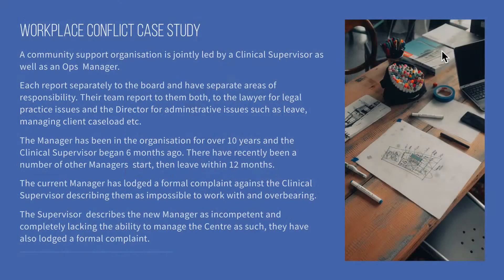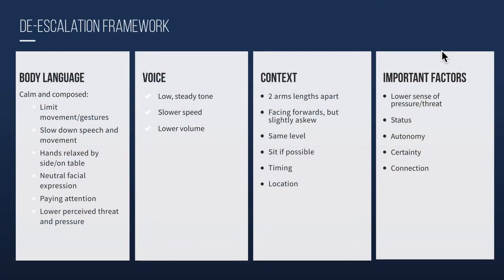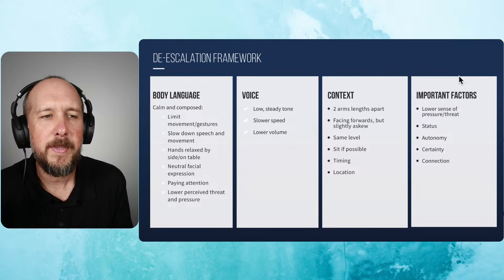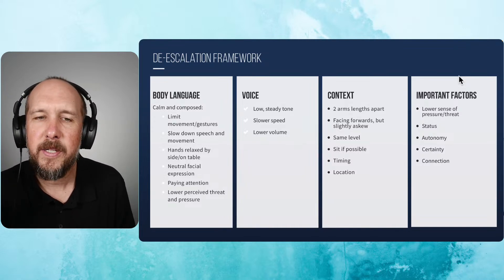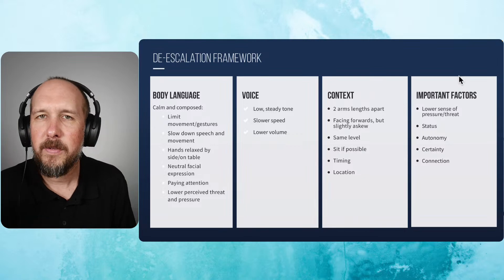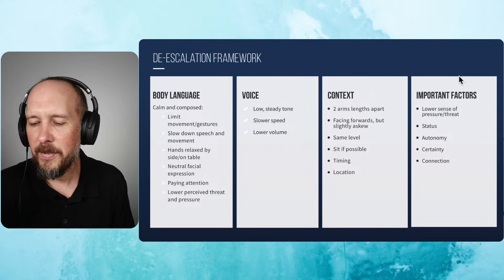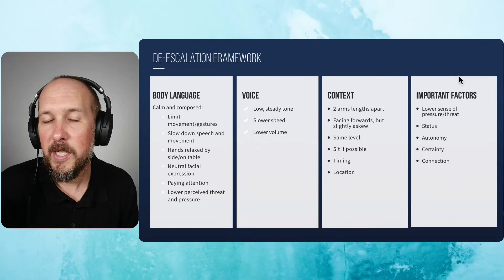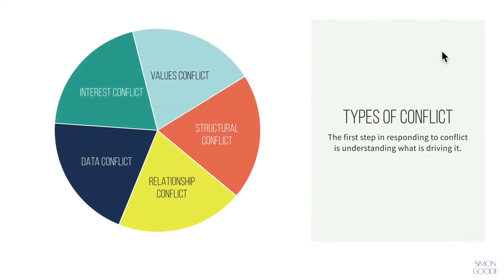So that's the classic matrix management dilemma. As you go about engaging with both people involved, it would be really important to apply the de-escalation framework — things like body language, being calm and composed, a low tone of voice, slower speed, lower volume, setting up the meeting room well, sitting if you're able to. I'll put that on the screen if you want to take a screenshot. I'd be happy to prepare a 30-minute training seminar just on de-escalation skills if you'd like — please let me know in the comments.